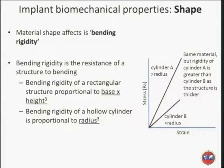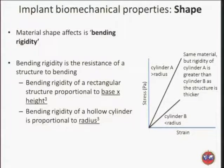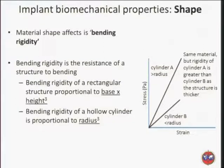Bending rigidity is really what we're trying to achieve in a fracture — to stop it moving. That's particularly true for intramedullary nails. There's a close relationship between the radius of an implant and its bending rigidity, and that's to the power of three for a hollow cylinder. For a solid cylinder, it goes up to the power of four. So for a plate, which is a rectangular structure, it's to the power of three relative to the thickness. For a hollow intramedullary nail — which is normally cannulated — it's also to the power of three, but a solid nail is very resistant to bending at the power of four.